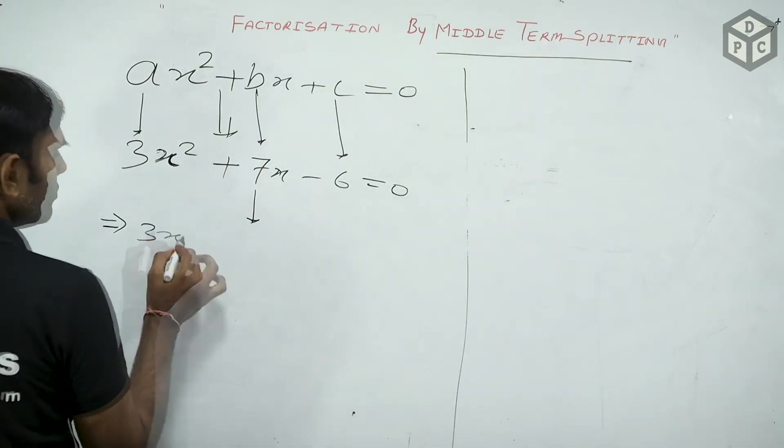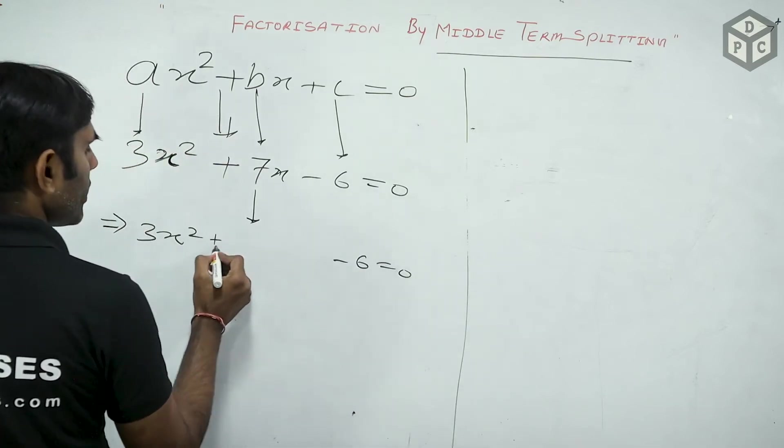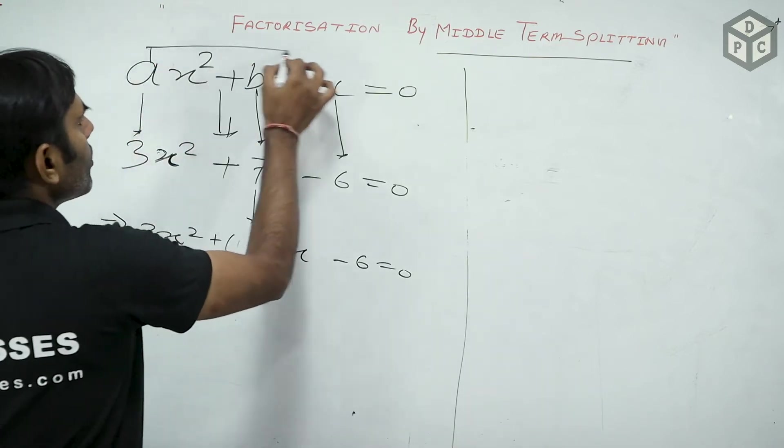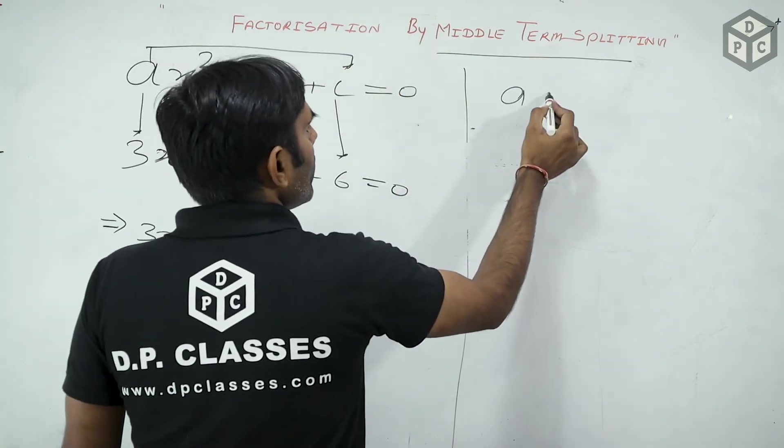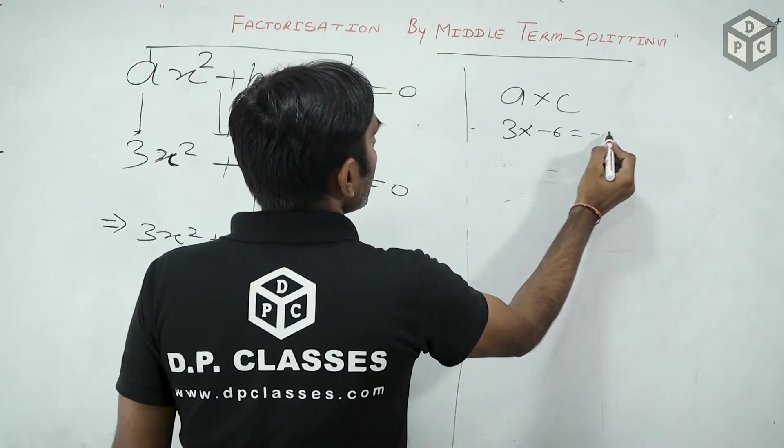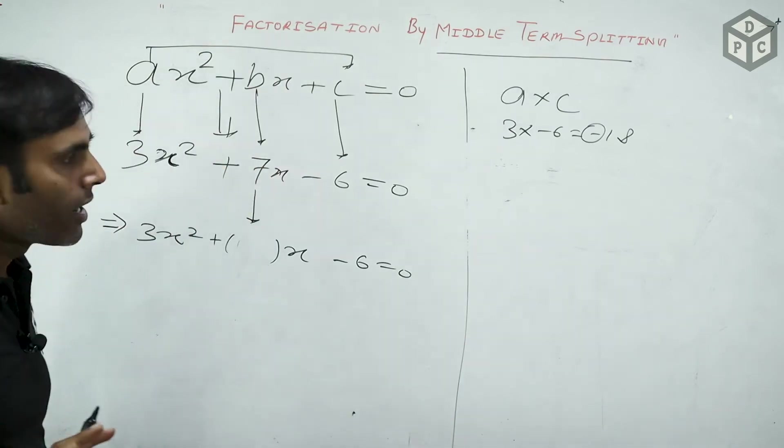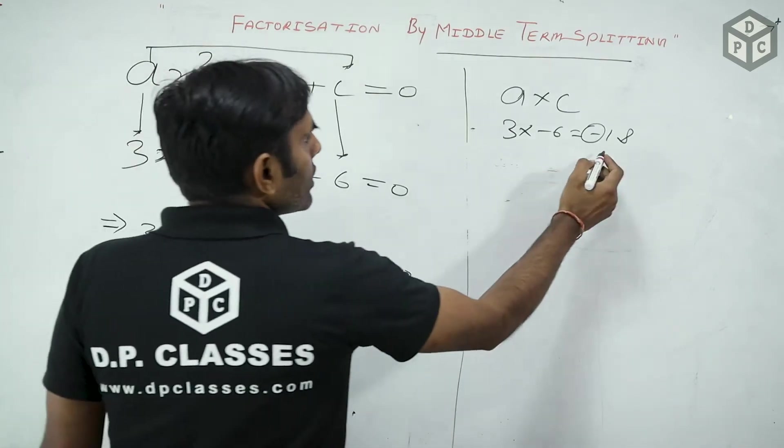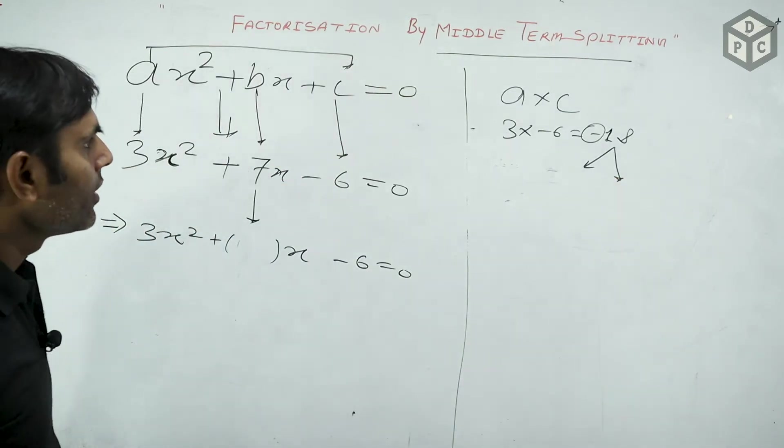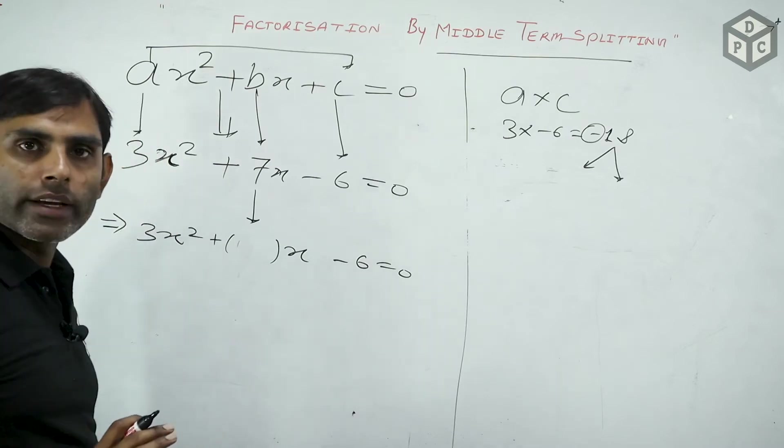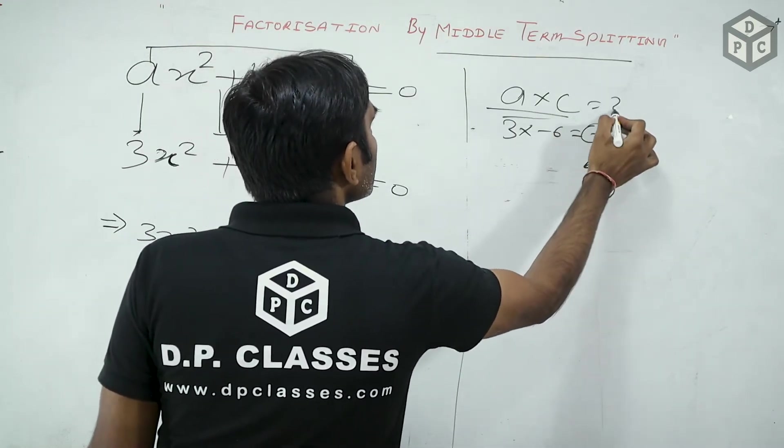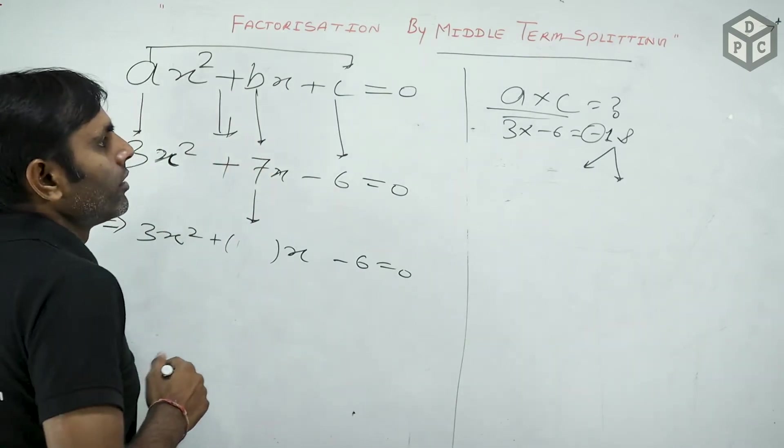What do we do? First term and last term to write down. Plus, the middle term to place vacant. I will write this. I am going to do a into c. What do we do? a into c. a means 3, c means minus 6. 3 into minus 6. So what do we do? Minus of 18. But I don't have to remember minus here. Minus of 18.